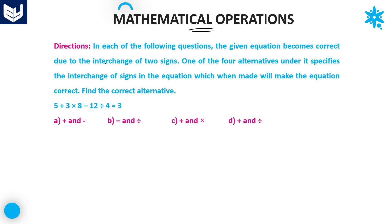First of all, read the sentences carefully. In each of the following questions, the given equation becomes correct due to the interchanges of two signs. This is very important — the equation is correct after interchanging only two signs. We have to identify those two interchanges. One of the four alternatives specifies the interchanges of signs which, when made, will make the equation correct. Only one option out of these four satisfies the given equation.